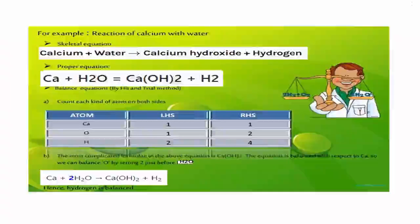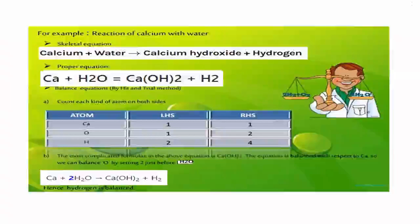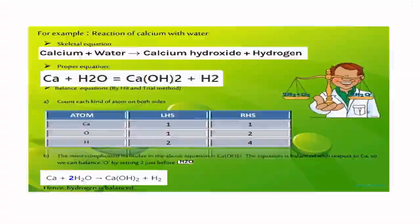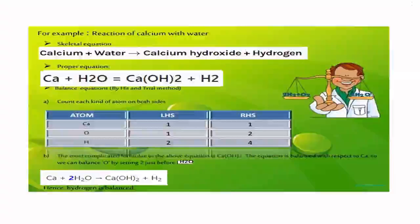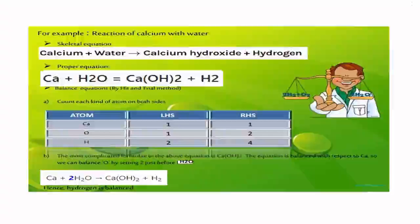You can write the number of atoms again: Ca 1 at LHS and RHS 1, O 2 at LHS and 2 at RHS, and H 4 at LHS and also 4 at RHS. Hence, the equation is said to be balanced.